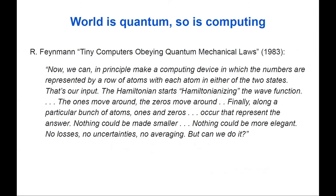Richard Feynman said in 1983 that we can potentially build computers governed by the rules of quantum mechanical laws. He said: 'Now we can in principle make a computing device in which numbers are represented by a row of atoms, each atom in either of two states. The Hamiltonian starts Hamiltonianizing the wave function. The ones move around, the zeros move around. Finally, ones and zeros occur that represent the answer. Nothing could be made smaller, nothing could be more elegant. No losses, no uncertainties, no averaging.'